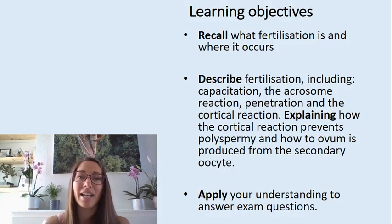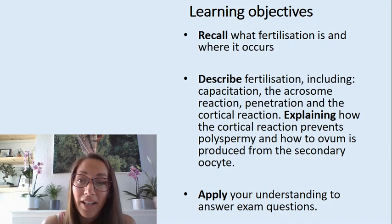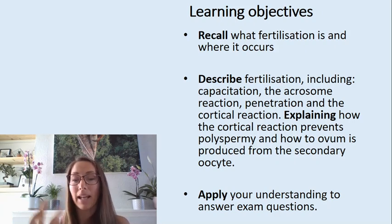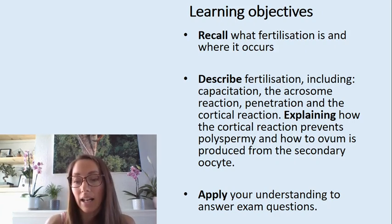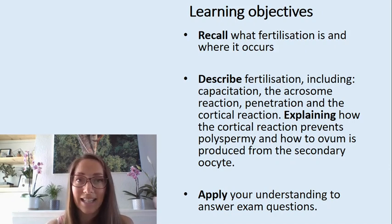The learning objectives for this session are for you to be able to recall what fertilization is and where it occurs, describe fertilization including capacitation, the acrosome reaction, penetration and the cortical reaction, and explain how the cortical reaction prevents polyspermy. Then you'll apply your understanding to answer exam questions later in the activity.